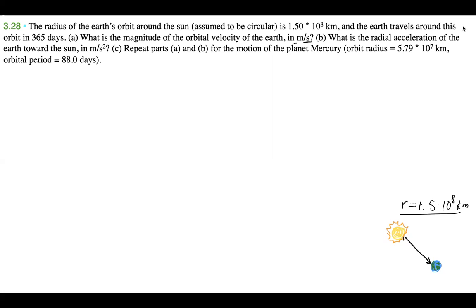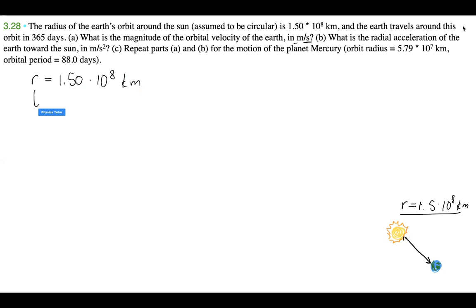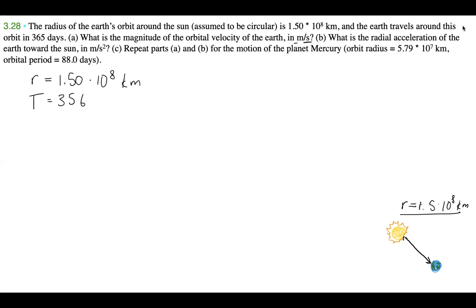Let's start with our knowns and write them down. The radius R of the Earth's orbit around the Sun is equal to 1.50 times 10 to the 8 kilometers. And the period T of the orbit is 365 days.